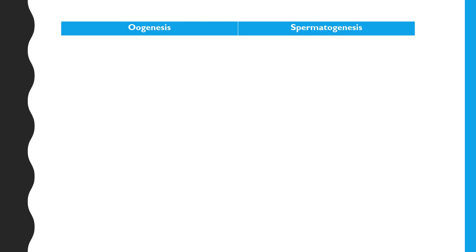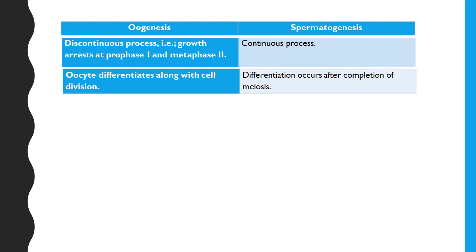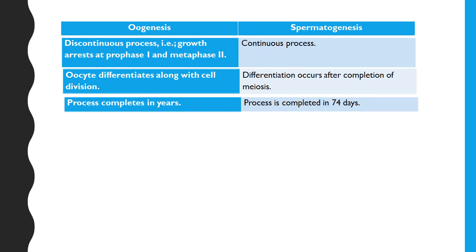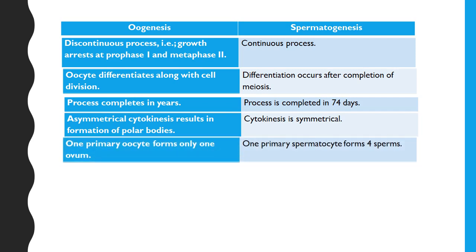We will now summarize the differences between oogenesis and spermatogenesis. Oogenesis is a discontinuous process as it is arrested at prophase first and metaphase second, whereas spermatogenesis is a continuous process. The oocyte differentiates along with cell division, whereas spermatids differentiate into spermatozoa after completion of meiosis second. Asymmetrical cytokinesis occurs during oogenesis, resulting in formation of three polar bodies, whereas cytokinesis is symmetrical in spermatogenesis. One primary oocyte forms one ovum, whereas one primary spermatocyte forms four sperms.